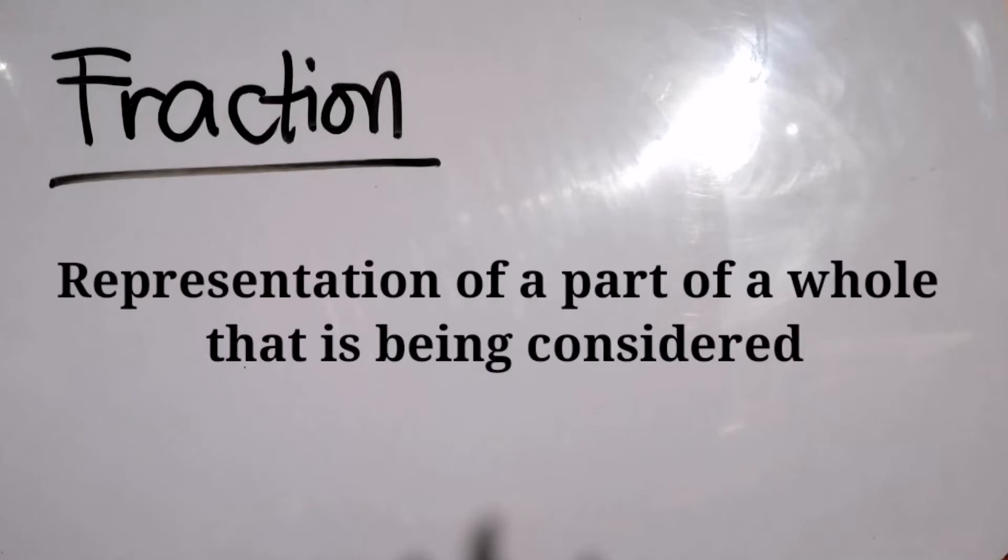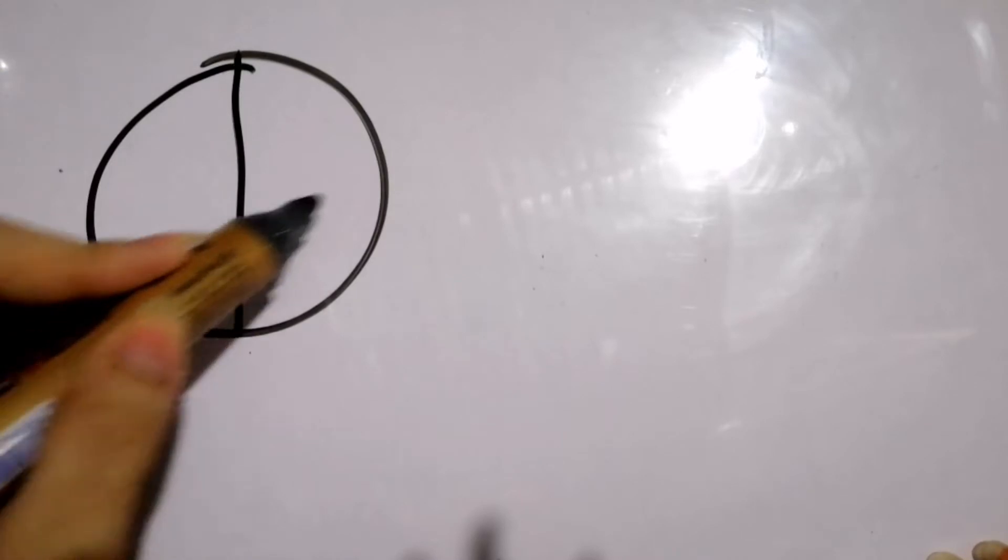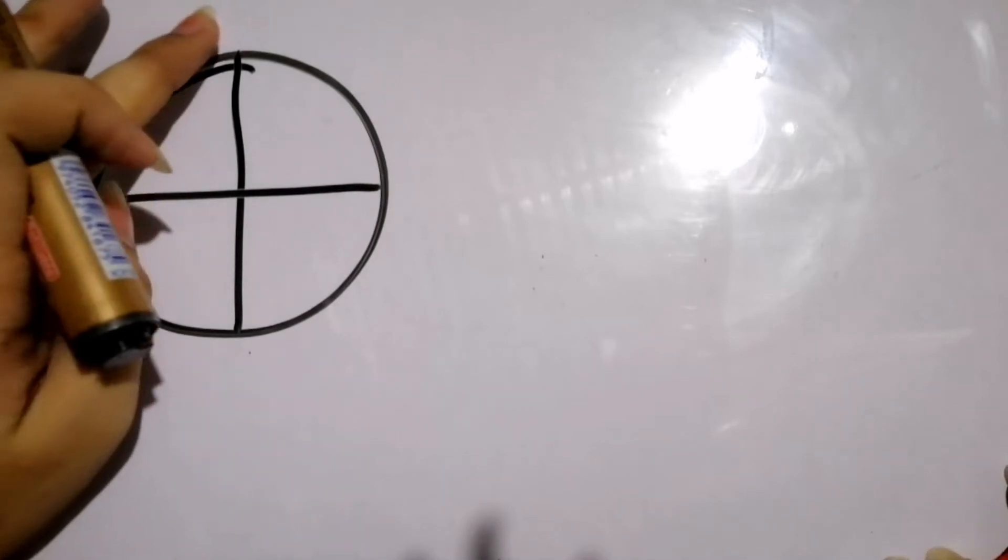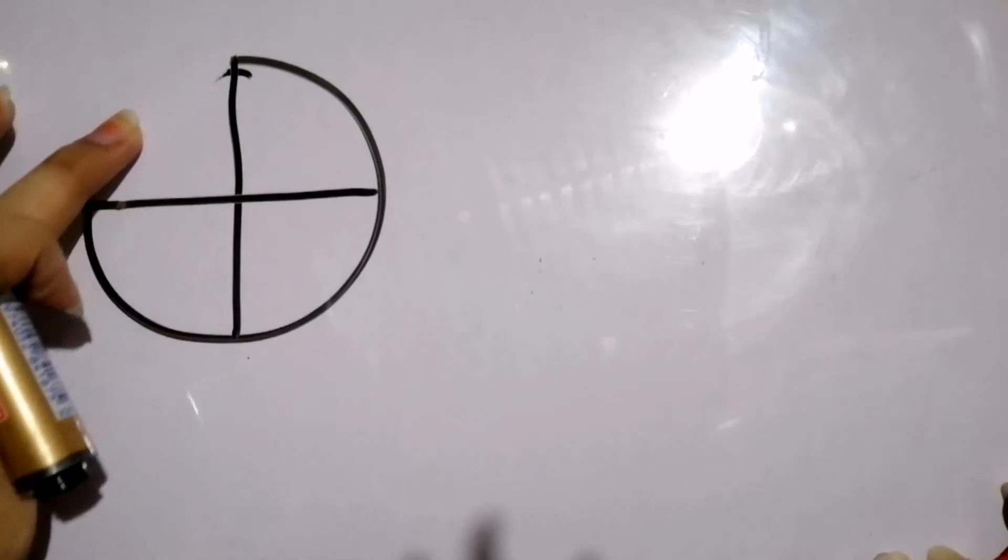To understand this further, let's have an example. Let's say we have one whole pizza and this whole pizza was divided or cut into four equal slices, so you now have four slices or four equal parts. Now after some time your friend ate one part of it, or one slice.